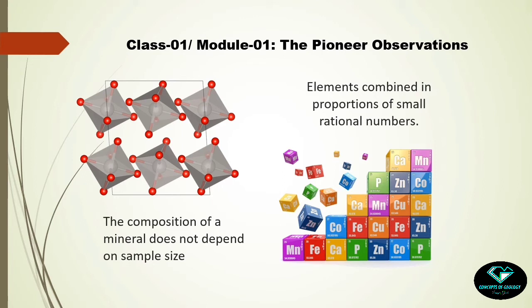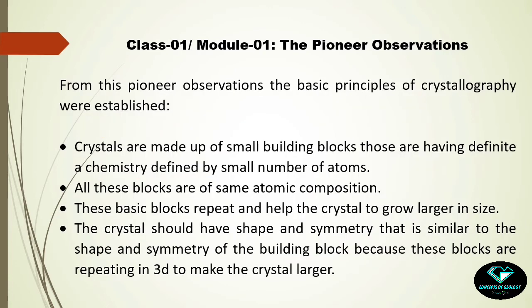Additionally, Joseph Proust and John Dalton proved that elements combine in proportions of small rational numbers. From these pioneer observations, the basic principles of crystallography were established. The first principle: crystals are made up of small building blocks having definite chemistry defined by a small number of atoms. The second principle: all building blocks are of the same composition. The third: the basic building block repeats, which helps the crystal grow in size. The fourth: the crystal should have a shape and symmetry similar to the shape and symmetry of the building block.